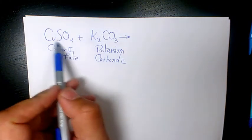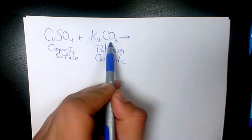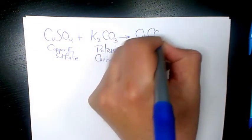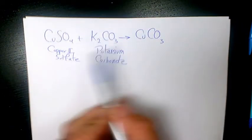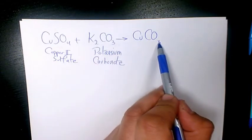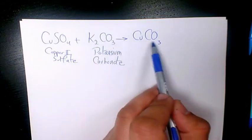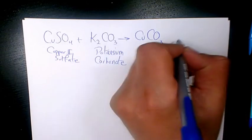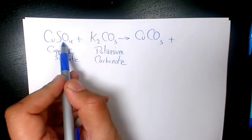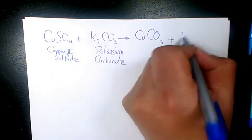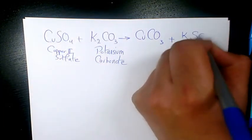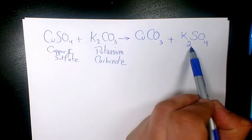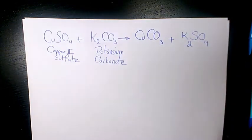We have Cu reacting with CO₃, which is carbonate, so CuCO₃. The charge for copper is 2 and the charge for carbonate is 2 as well, so that's why we don't write any coefficient there. And here we have potassium and SO₄ — potassium is +1 and SO₄ is -2, so it's going to be K₂SO₄.